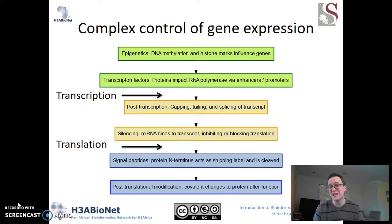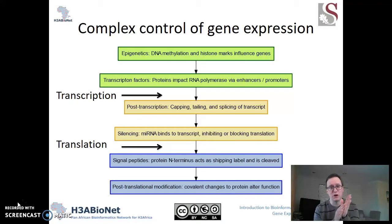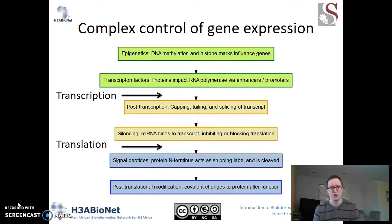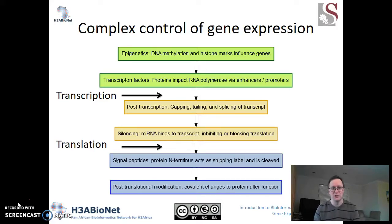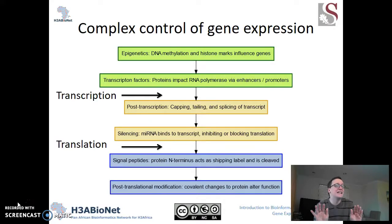We also have the process of silencing. Many people have heard of microRNAs. These can bind to complementary sequences in the messenger RNAs and cause them to be broken down rather than sent to translation. After translation, there are more things that must be done to these polypeptides to turn them into mature proteins. Among them are signal peptides, usually found at the end terminus of the protein, which can serve as a shipping label for where the protein should go in the cell. Similarly, we have post-translational modifications — covalent changes to the structure of proteins. Before, you may have a protein that's completely inert, but add a phosphorylation in the right spot, and suddenly it springs into action.